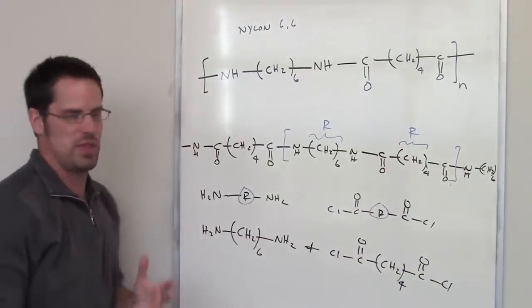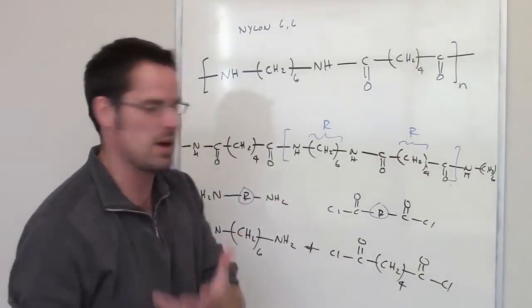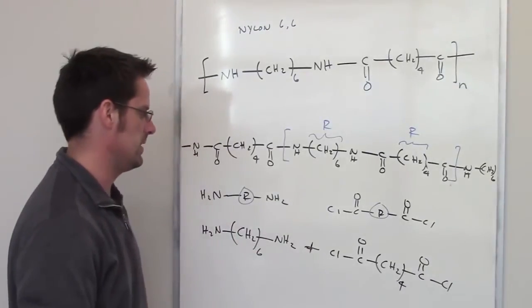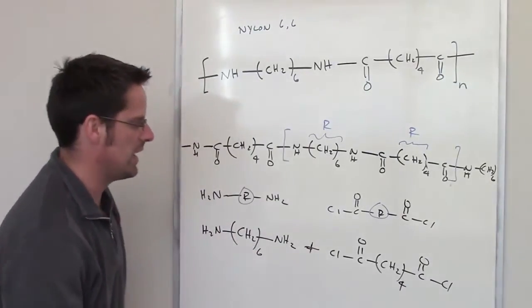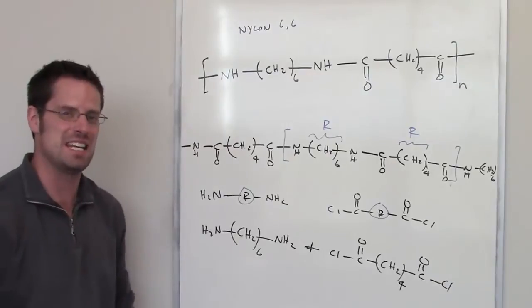And then et cetera for hundreds or maybe thousands of different repeats, and that would give us our final nylon. This is the final answer. These are the two monomers you would need for this question.